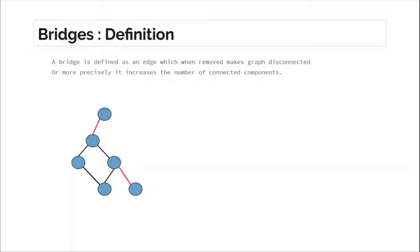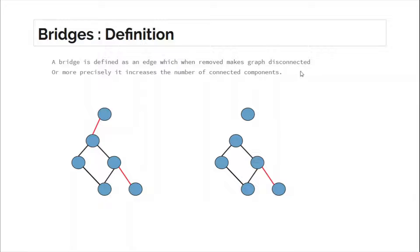If you see this graph, it is currently connected, and the ones marked red are actually the bridges. If you remove any of the edges marked red, the result would look something like this — the graph is now disconnected, or the total number of connected components has increased. So an edge is a bridge if it increases the number of connected components when removed, or it makes the graph disconnected.